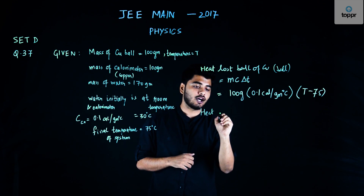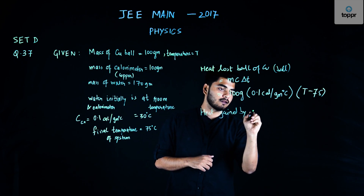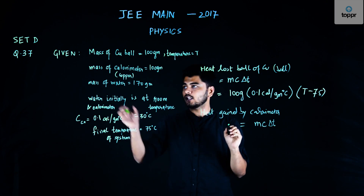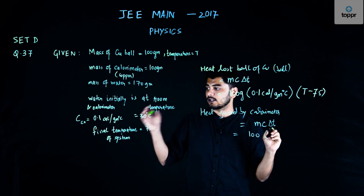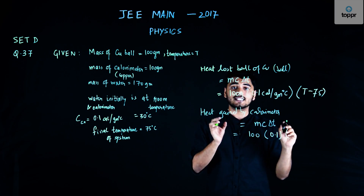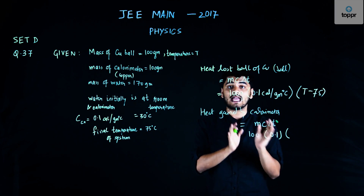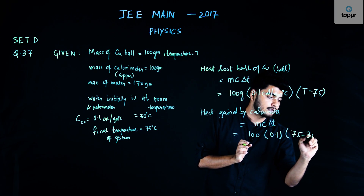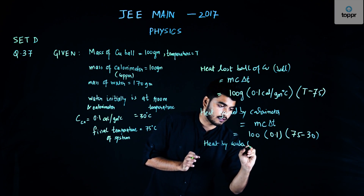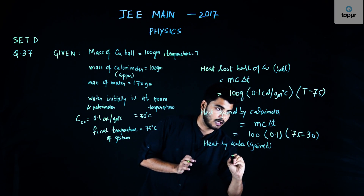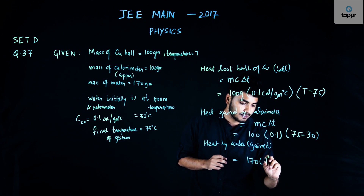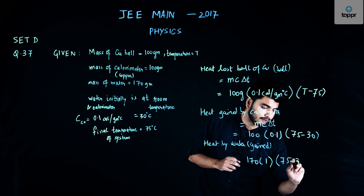The heat gained by the calorimeter is m·c·ΔT: mass = 100 grams, specific heat of copper = 0.1 calories per gram per degree Celsius, and ΔT = 75 − 30. This is equation two. The heat gained by water: mass = 170 grams, specific heat of water = 1 calorie per gram per degree Celsius, and ΔT = 75 − 30. This is equation three.